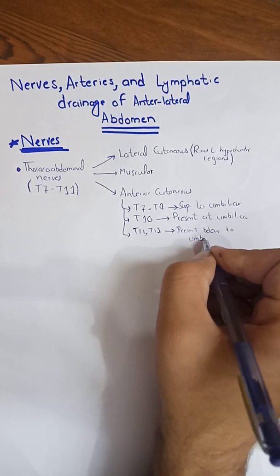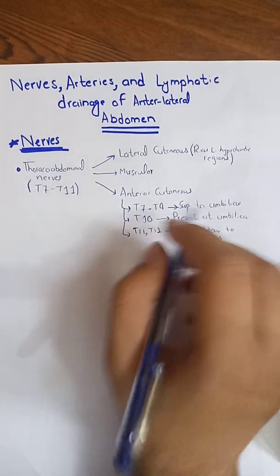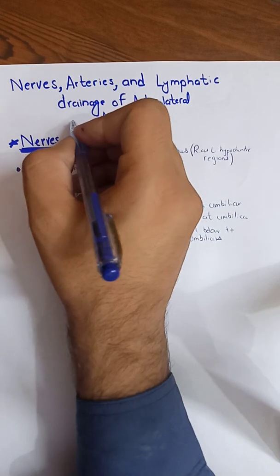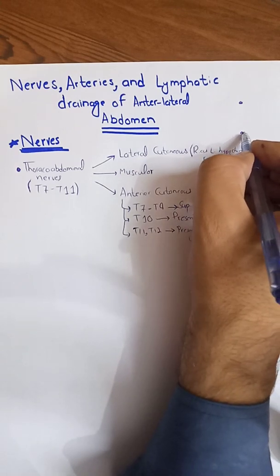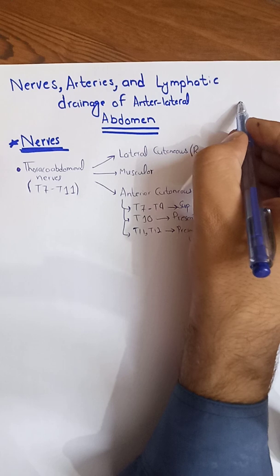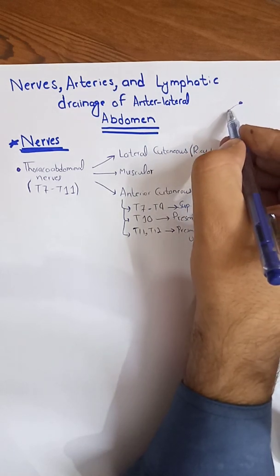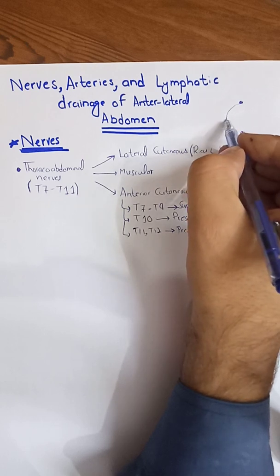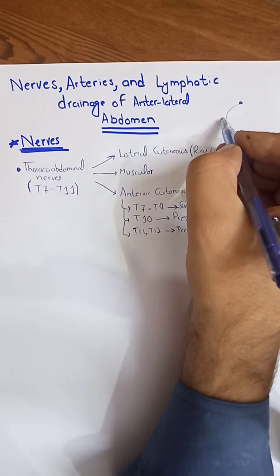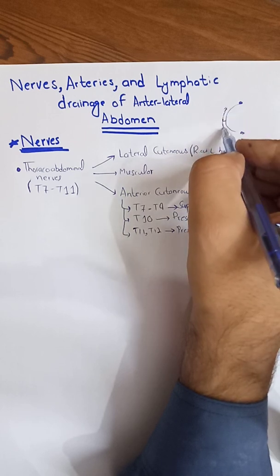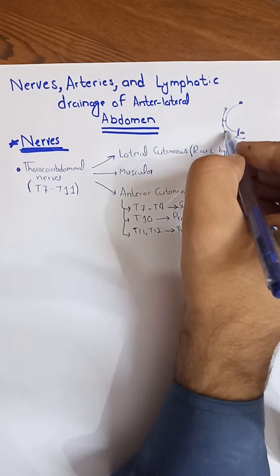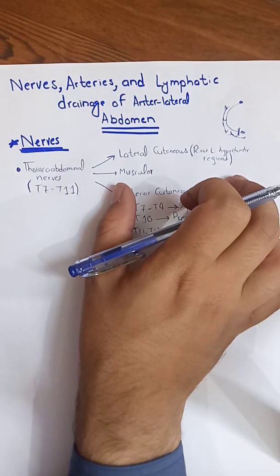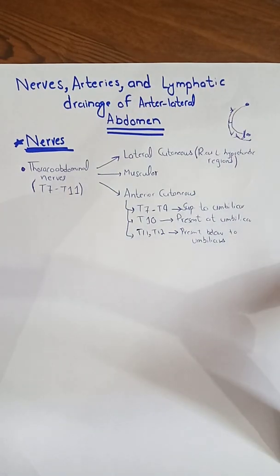To illustrate this with a small diagram: the nerves originate from the vertebra, for example T7, and travel across. At the level of the anterior axillary line they give the lateral cutaneous branch supplying the lateral skin, and near the sternum at the parasternal line they give the anterior cutaneous branch supplying the skin of the anterior abdominal wall.